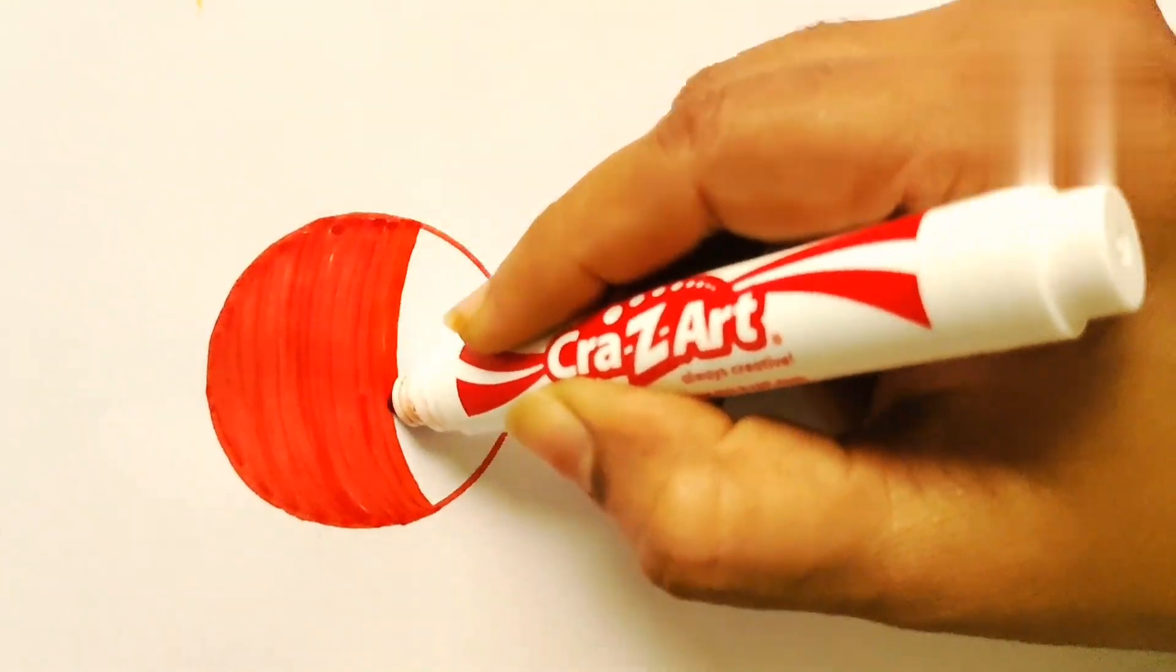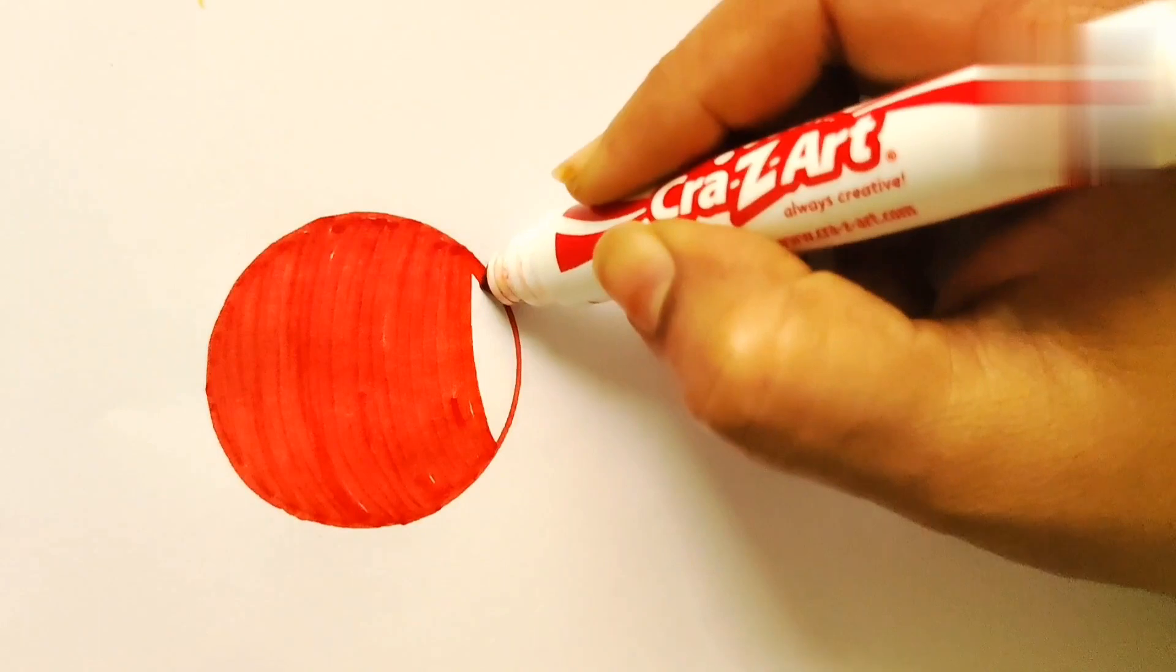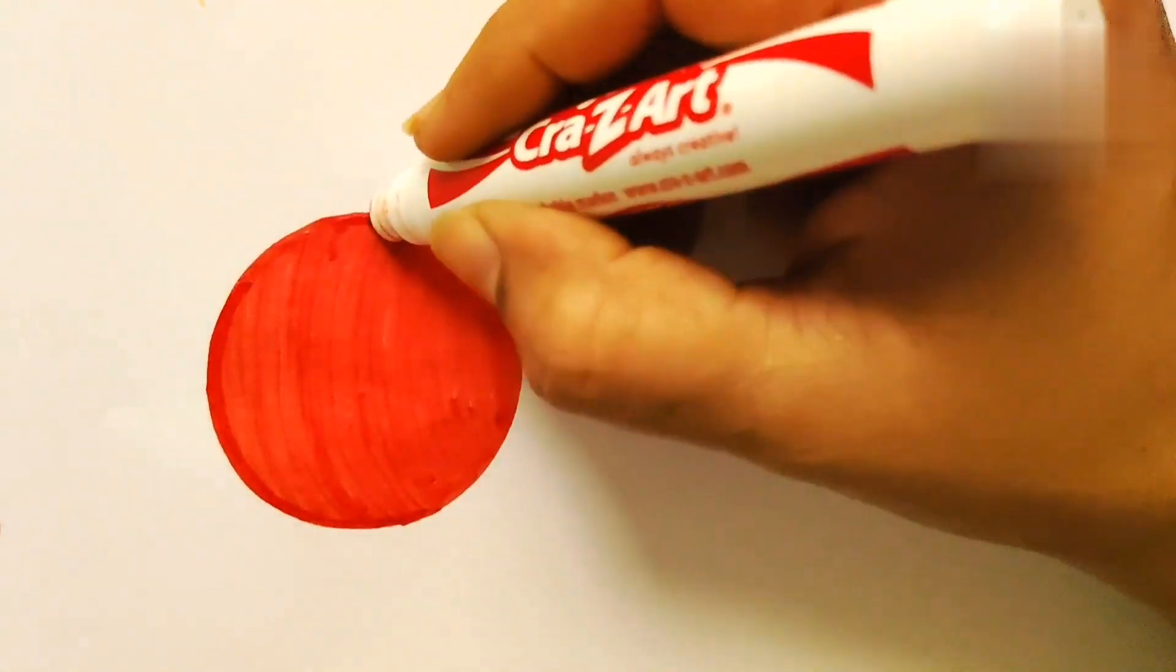Yes, coloring the circle in red color. It is almost finished. It looks very beautiful. And yes, we will make a border.